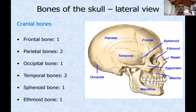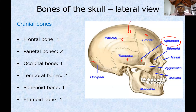The cranial bones: you have a frontal bone, then two parietal bones left and right, then one occipital bone, then two temporal bones left side and right side, then there is one sphenoid bone — you can see the sphenoid here, but you can only see a small part of it on either side. To see it clearly you have to look inside the cranium or look at an inferior view of the skull.